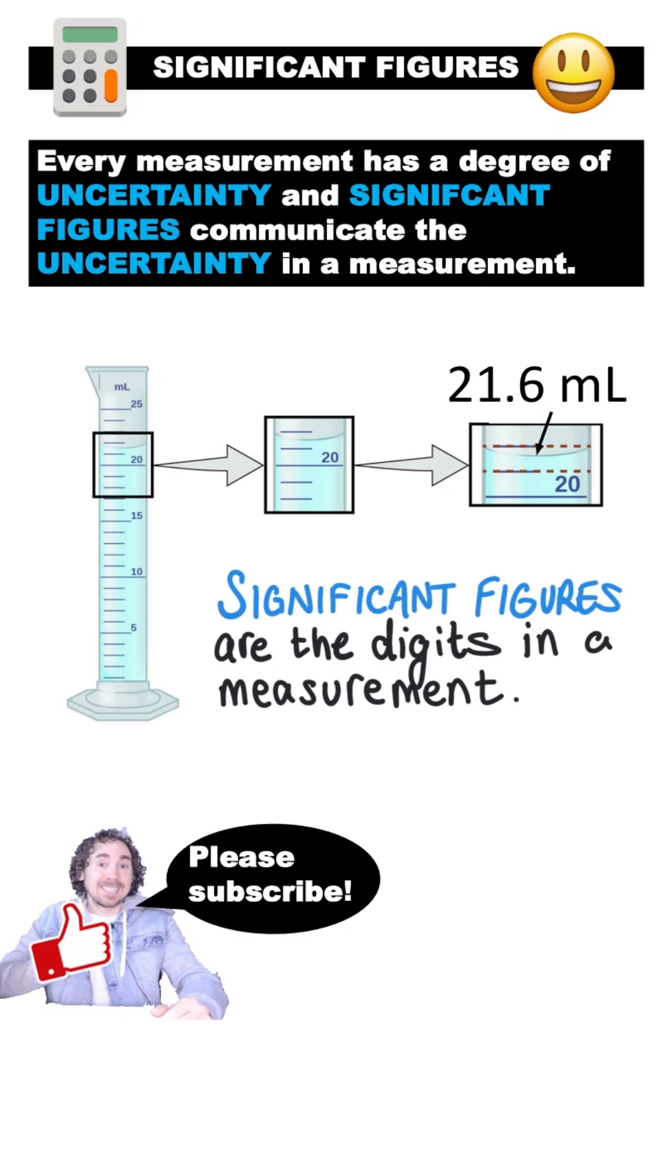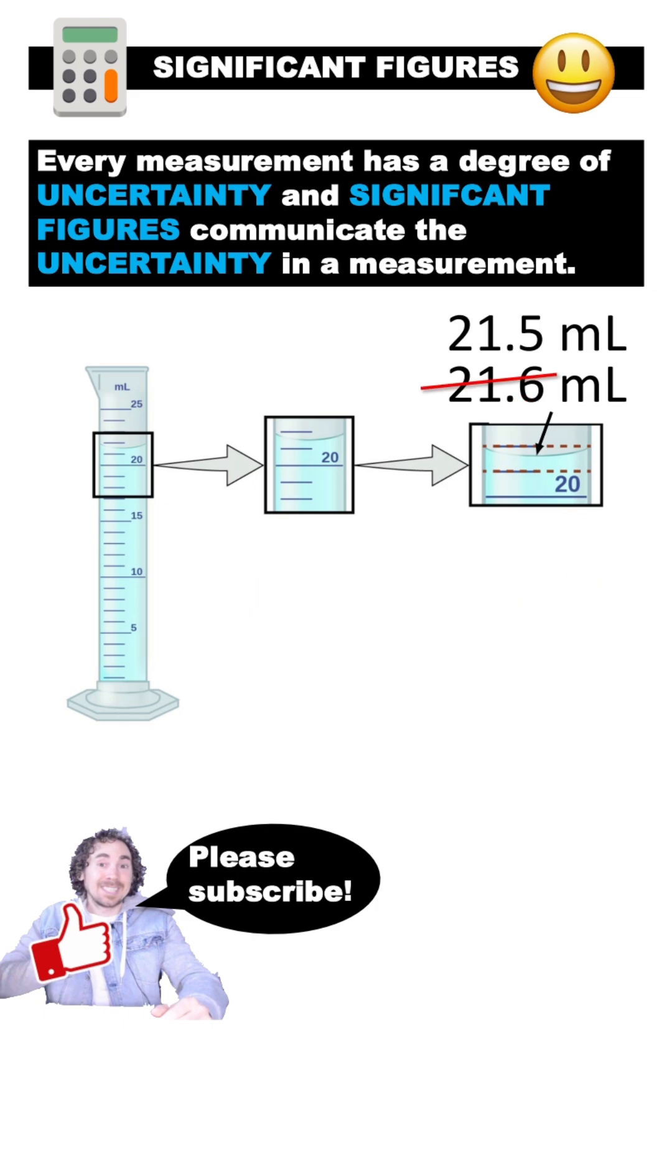There's uncertainty because the last digit is an estimated digit, and it's up for the discretion of the person making the measurement.